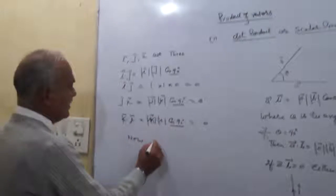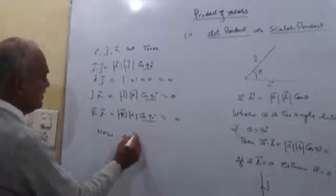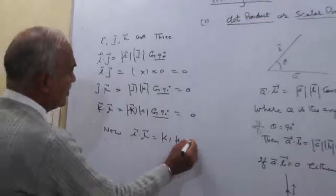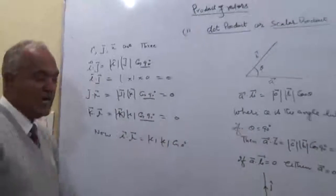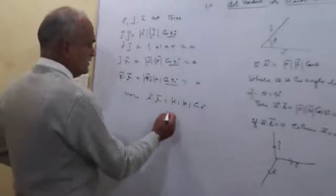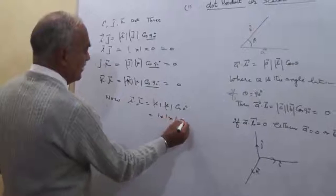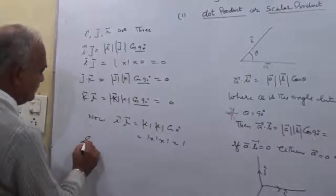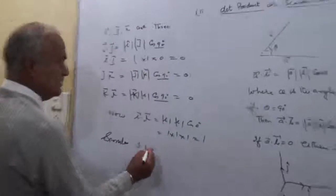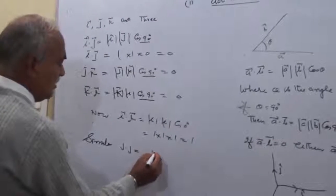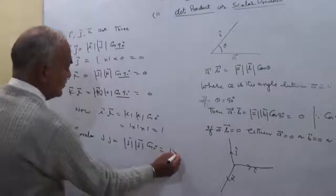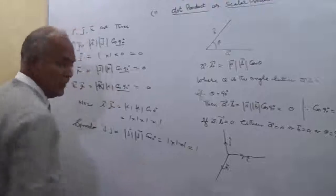Now, I dot I equals |I| times |I| times cos 0, because the I vector makes an angle of 0 degrees with itself. This equals 1 times 1 times 1, which equals 1. Similarly, J dot J equals |J| times |J| times cos 0, which is 1 times 1 times 1, equal to 1.